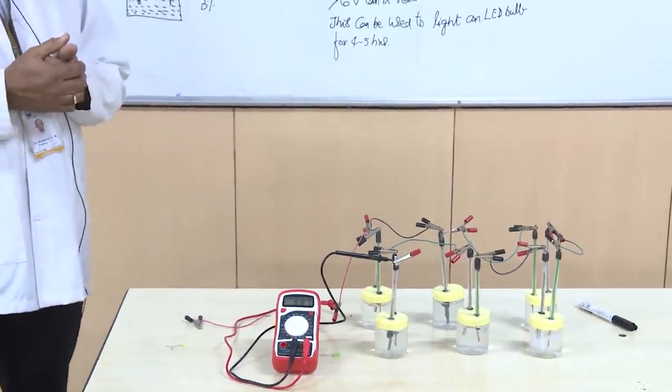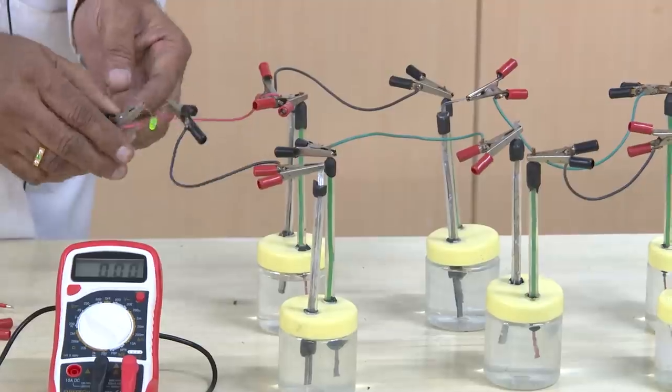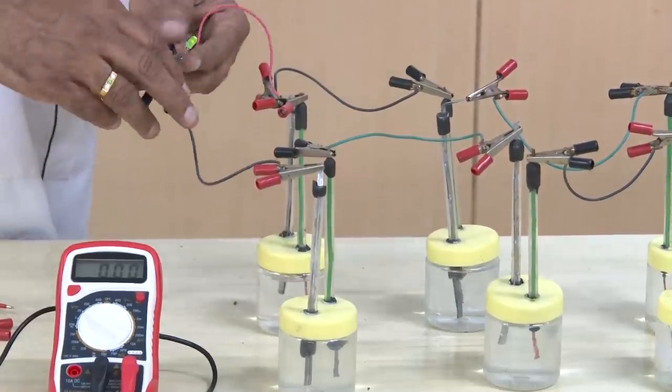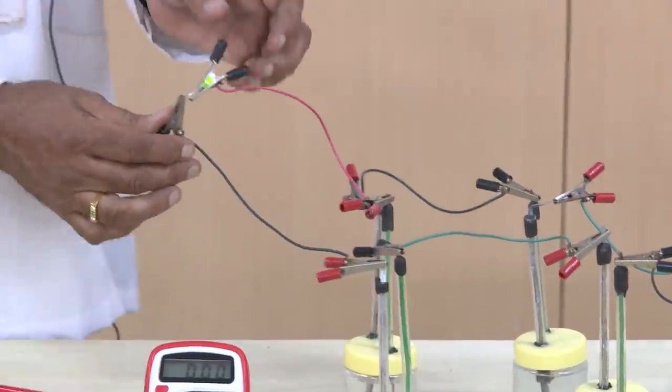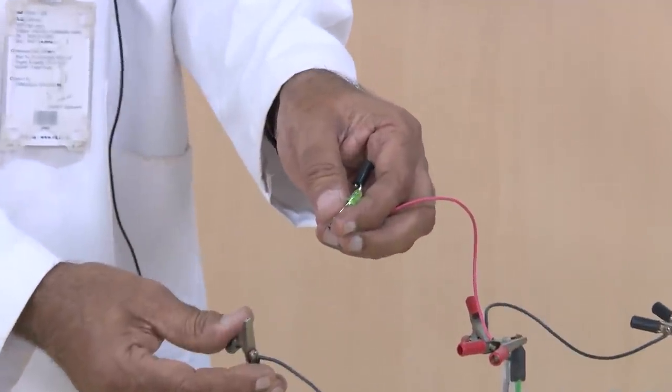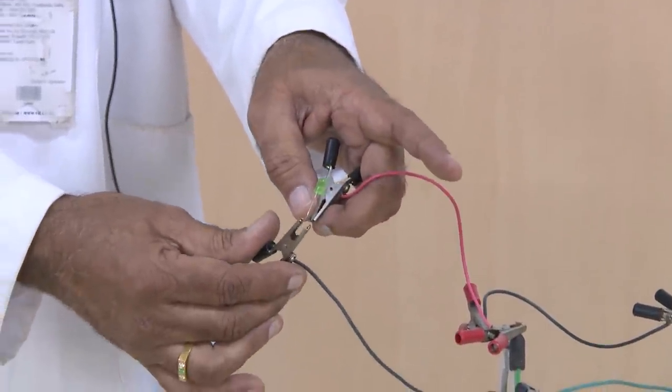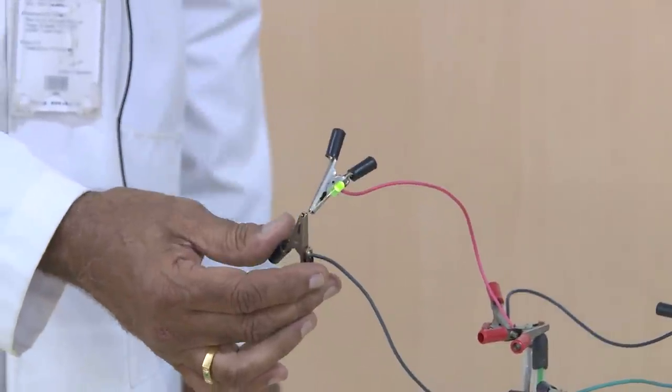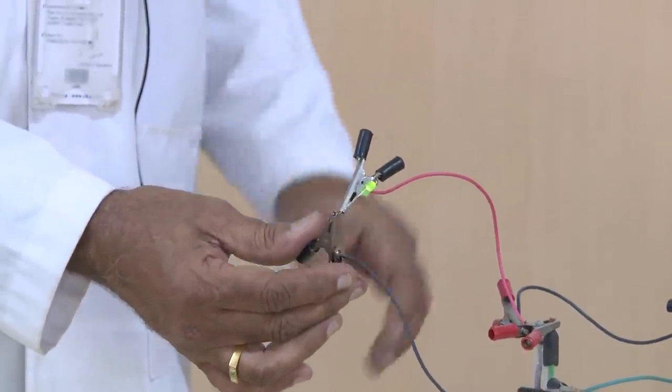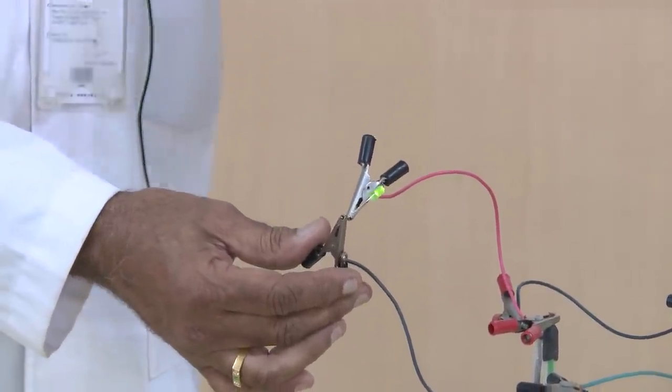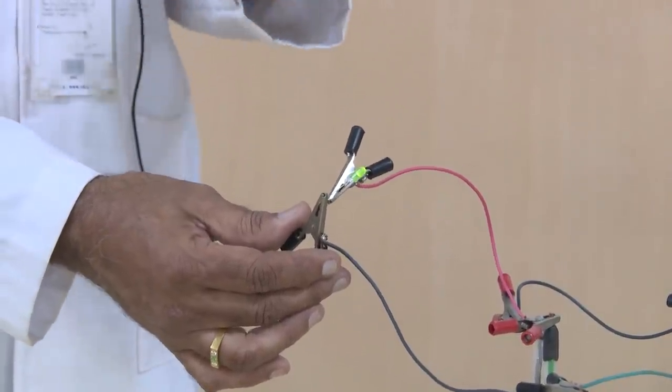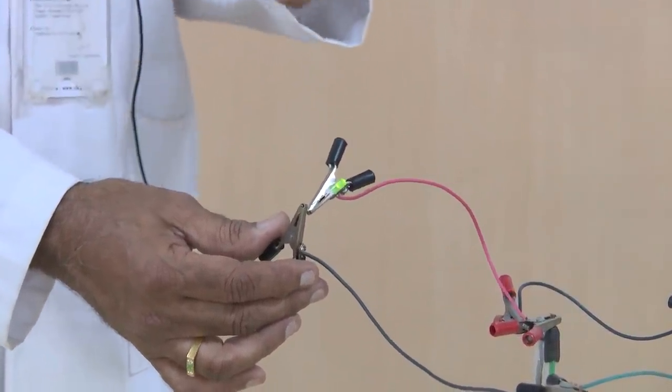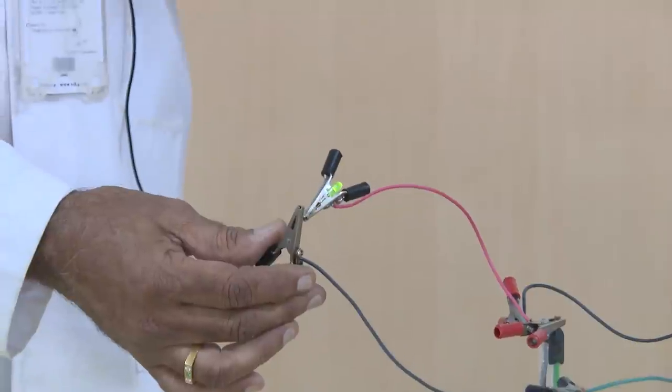Now ultimately this has to be used for some application. Now I have connected one 6 volt LED bulb. I will just show you, when I remove the connection, the bulb is off. When I put on the connection, the bulb is on. So this is a 6 volt LED bulb, it is able to switch on by connecting these cells in series. This will run for nearly 3 to 4 hours uninterrupted.